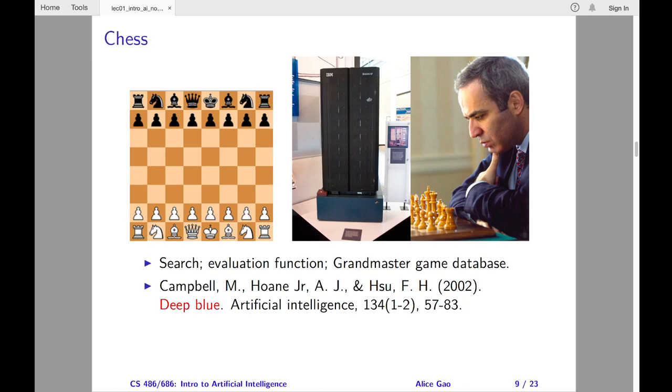In 1997, IBM's Deep Blue program played Garry Kasparov, the world champion in chess at the time. Deep Blue defeated Kasparov in a six-game match. This match was the first time that a computer program defeated a world chess champion in the tournament.